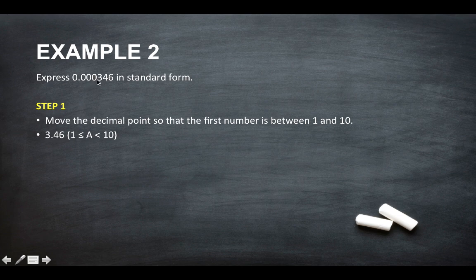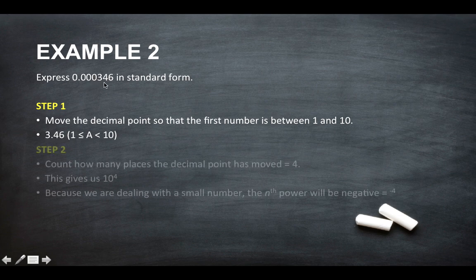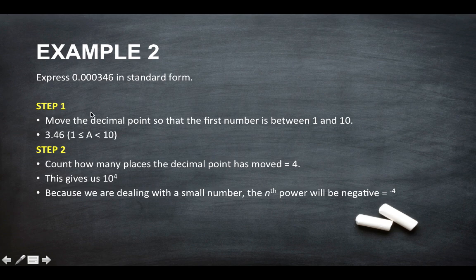So we can move it 1, 2, 3, 4 spaces to make 3.46 because this number is between 1 and 10. So because the decimal point has moved 4 spaces, this gives us 10 to the power of 4.